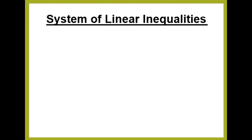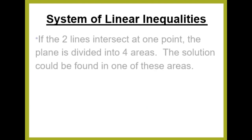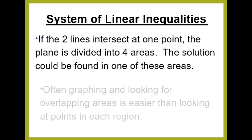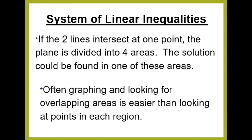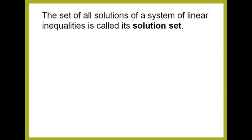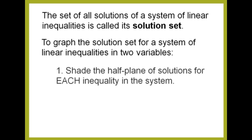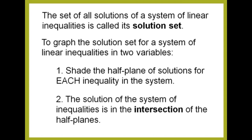Here is the definition of a System of Linear Inequalities: if the two lines intersect at one point, the plane is divided into four areas, and the solution could be found in one of these areas. Graphing and looking for overlapping areas is often easier than checking points in each region. The set of all solutions of a system of linear inequalities is called its solution set. To graph the solution set, first shade the half-plane of solutions for each inequality; second, the solution of the system is in the intersection of the half-planes.